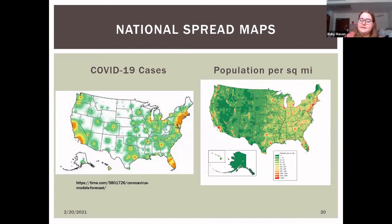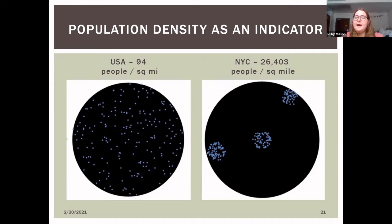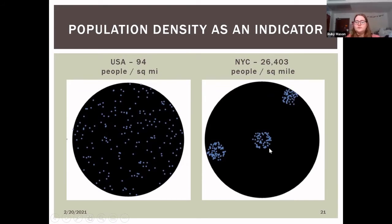A challenge we ran into was modeling population density accurately in Mathematica. The US population density was 94 people per square mile on average, but New York City was 26,403 per square mile. Assuming uniform density doesn't reflect reality — you'd see people concentrated in clusters in cities like New York, Rochester, and Buffalo. Showing this visually while correlating with population density was a much greater challenge.